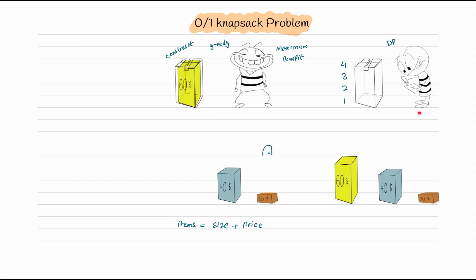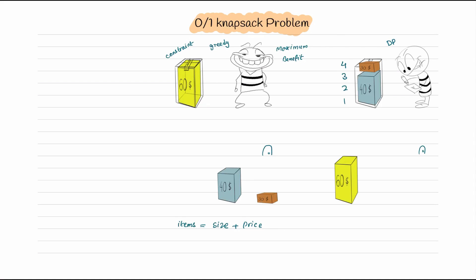The second friend enters the building, finds the same three items, but doesn't pick anything immediately. He starts writing something on a piece of paper for each item he finds. Then, rather than picking the item with the maximum price, he picks the item of size three and price forty, and the item of size one and price thirty. The greedy thief got sixty dollars, while the DP thief got forty plus thirty, a benefit of seventy dollars.